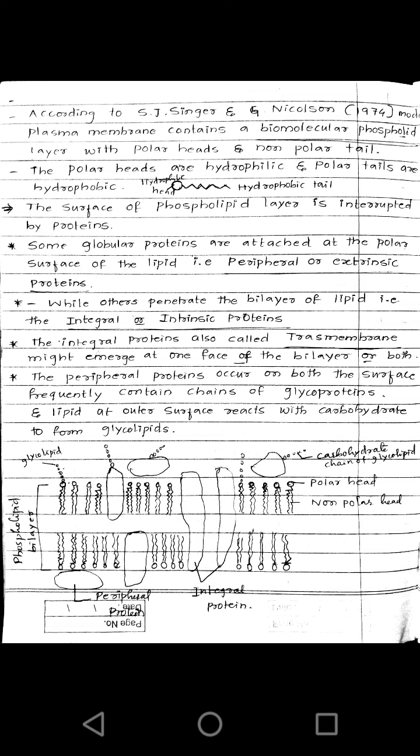In the fluid mosaic concept, the plasma membrane is made of protein and phospholipid. The proteins are mainly formed of alpha globular proteins. In the plasma membrane we see two types of proteins: intrinsic proteins, which are completely embedded in the phospholipid bilayer, and extrinsic proteins, which are present outside the phospholipid bilayer but attached to the polar heads of the bilayer.